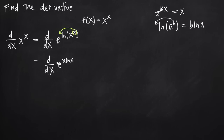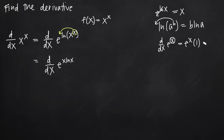Now we can actually take the derivative of e to the x times natural log of x. Remember that the derivative of e to the x is just e to the x. However, here we have to use the chain rule and multiply by the derivative of our inside function, which is x times natural log of x. The chain rule tells us to leave the outside function — e to the something — untouched, then multiply by the derivative of the inside.